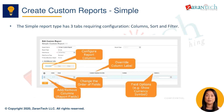For simple reports, there are three main tabs to configure: columns, sort, and filter. This allows you to select the fields, sort order, and filters for your report.